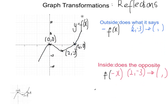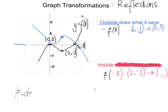Now let's look at reflections. For the outside type — negative f(x) — the negative sign is outside the function, so it changes only the y coordinate, effectively multiplying by minus one. So (2,−3) goes to (2,3). The coordinates (0,0) and (4,0) are unchanged. This is a reflection in the x-axis.